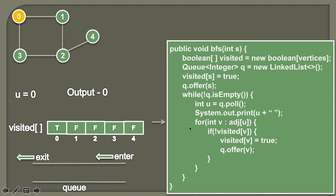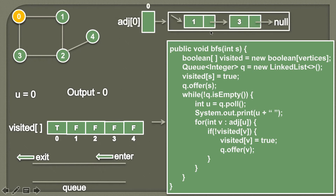In breadth first search, after visiting any particular node, we go towards its adjacent nodes. The nodes adjacent to zero are one and three. We apply a for loop that traverses the adjacent nodes of zero. Looking at the adjacency list, zero is connected to one and zero is connected to three, so we traverse each adjacent node of zero.